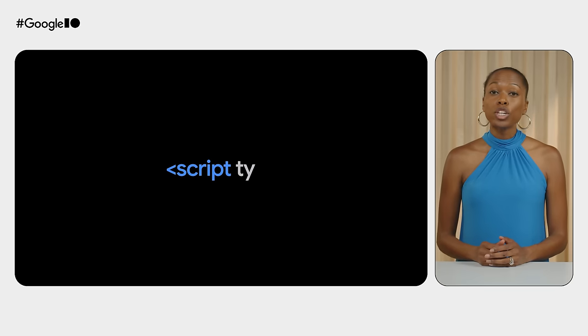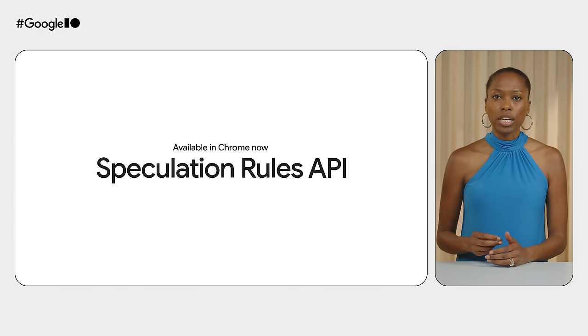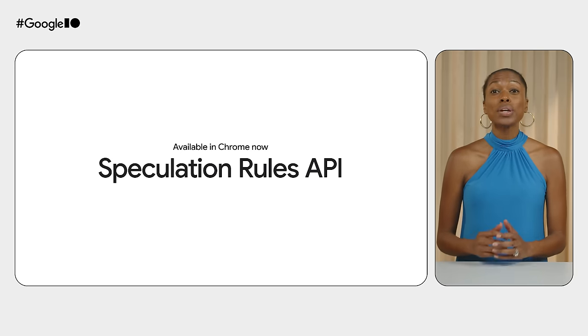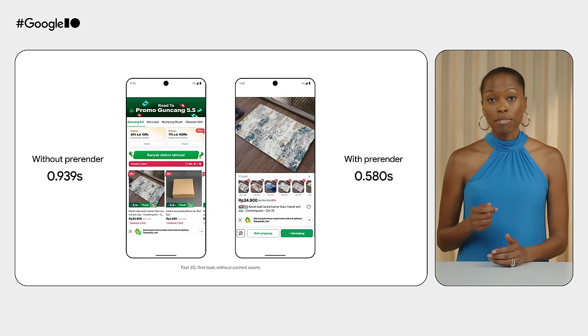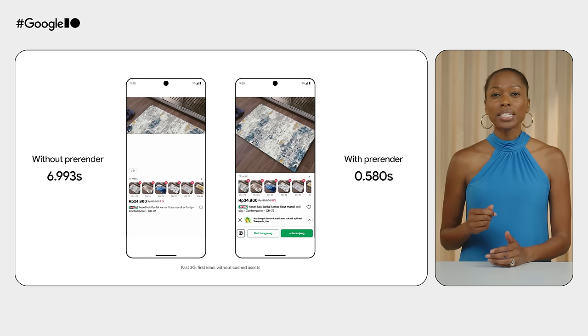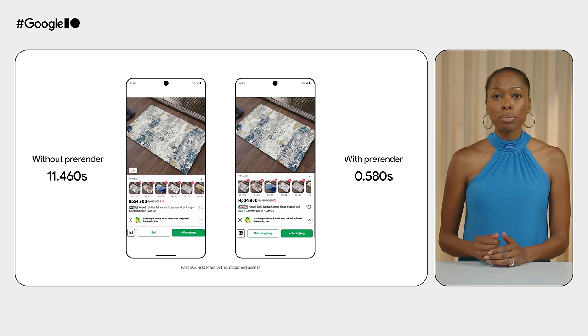With all the exciting AI news, let's turn the page to see how we're improving web page navigation. With the new Speculation Rules API, we are enabling near-instant navigation by prefetching and pre-rendering pages in the background. This allows pages to load in milliseconds. As an early tester, Tokopedia was able to see a 4.8-time loading time improvement to the Largest Contentful Paint (LCP) of their product description pages. Get started with only a few lines of code.